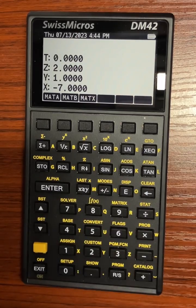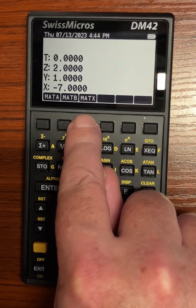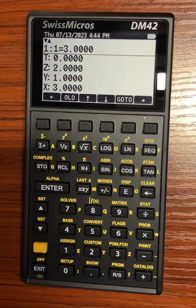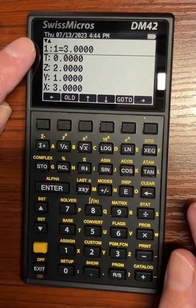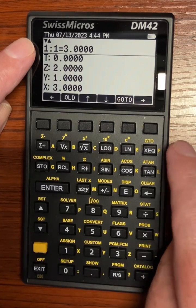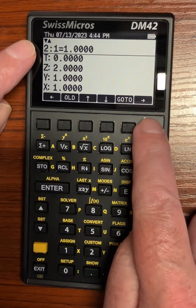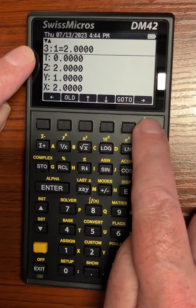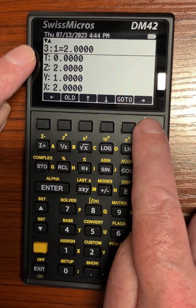Now instead of having to invert A and multiply by B, you hit the matrix X button. You can see the X solution is three, Y solution is one, and Z solution is two.